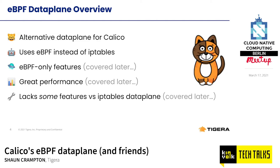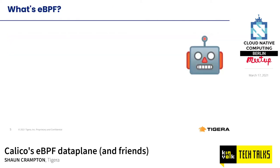A caveat: the eBPF data plane has some new features that we don't have in the iptables world, but it also lacks a few features we do have there. Some of those are due to fundamental differences between the two — for example, the iptables LOG action is not available from eBPF because it's an iptables-specific feature.